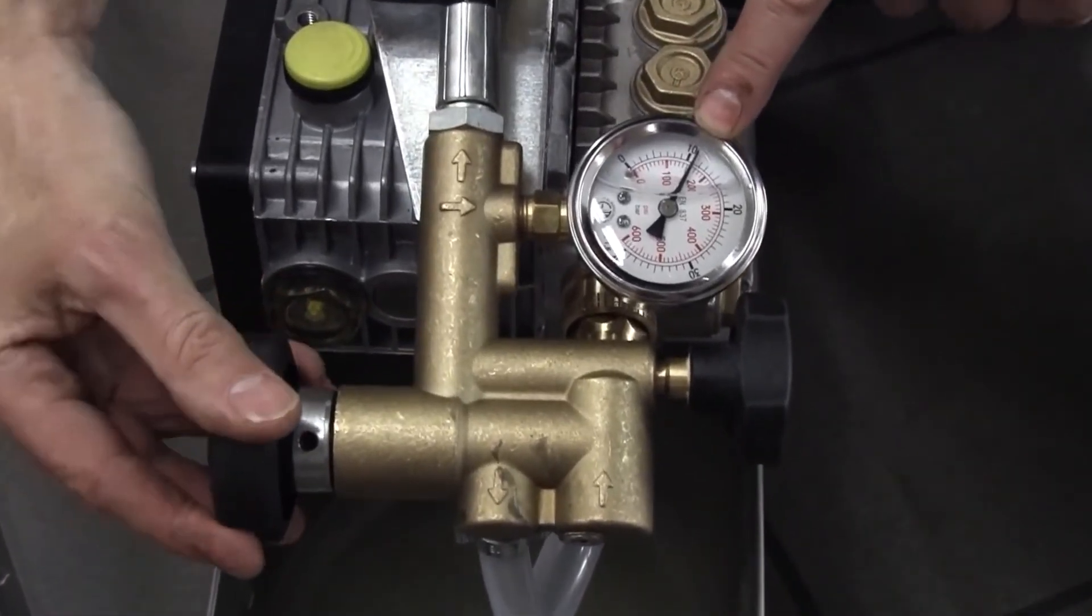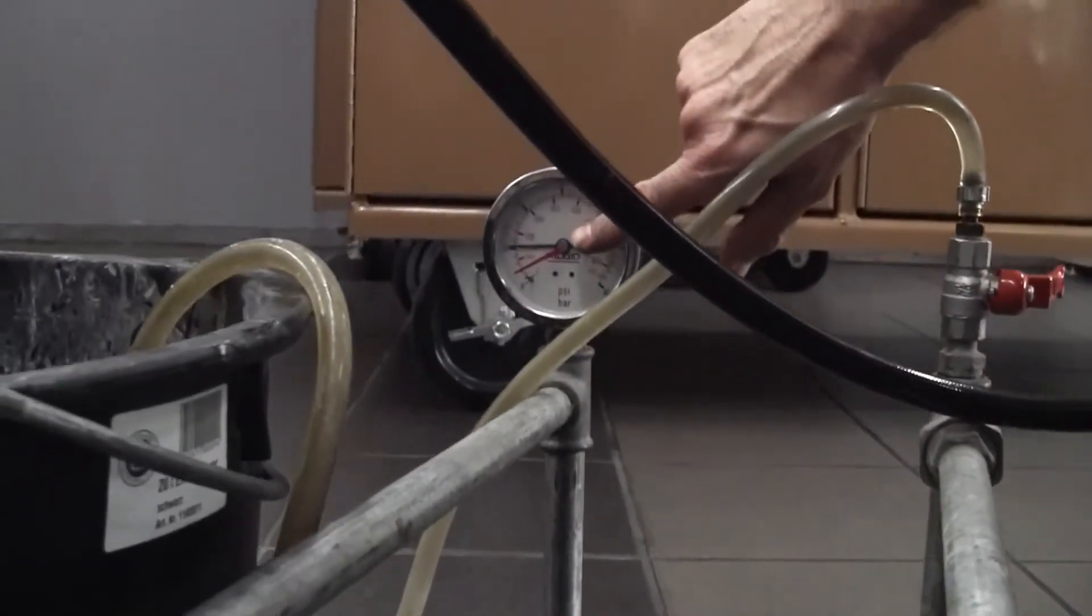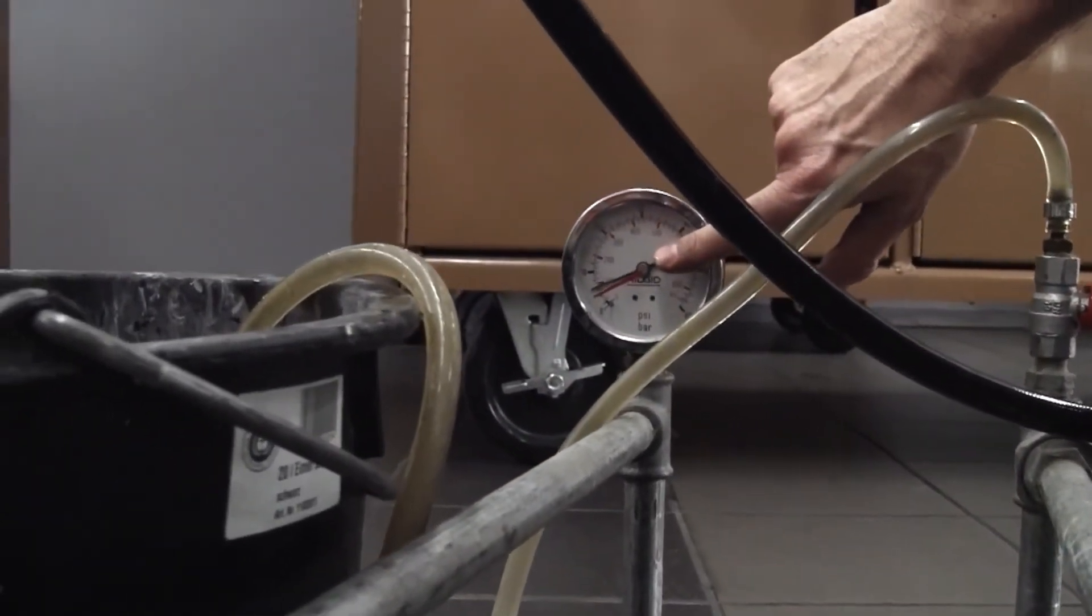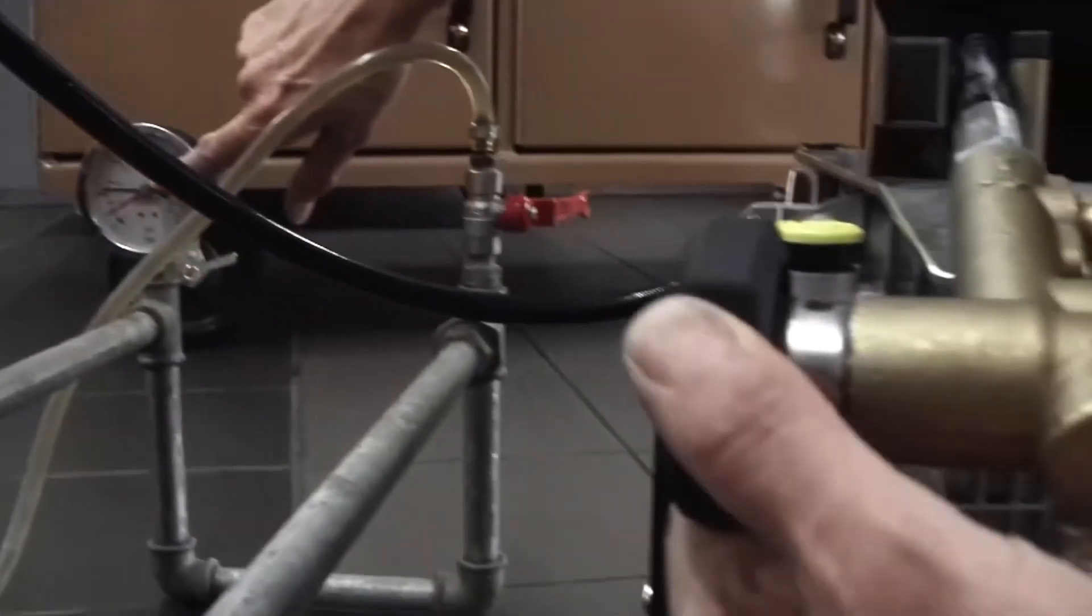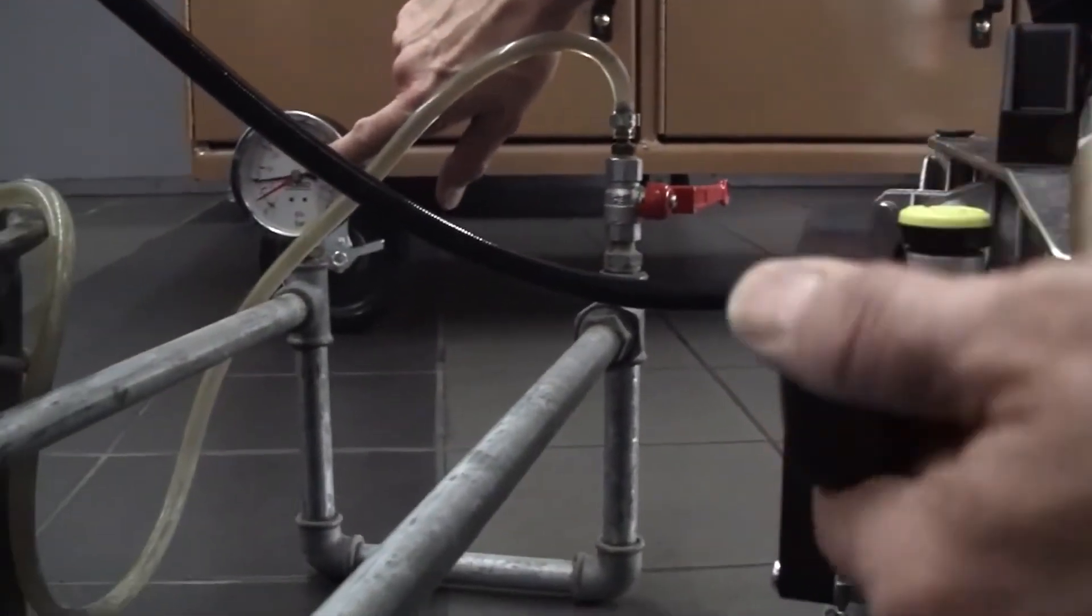The larger of the two black knobs adjust the output pressure to the system. So what we do is you build the pressure that you require and then you lock the pressure in with the small black knob.